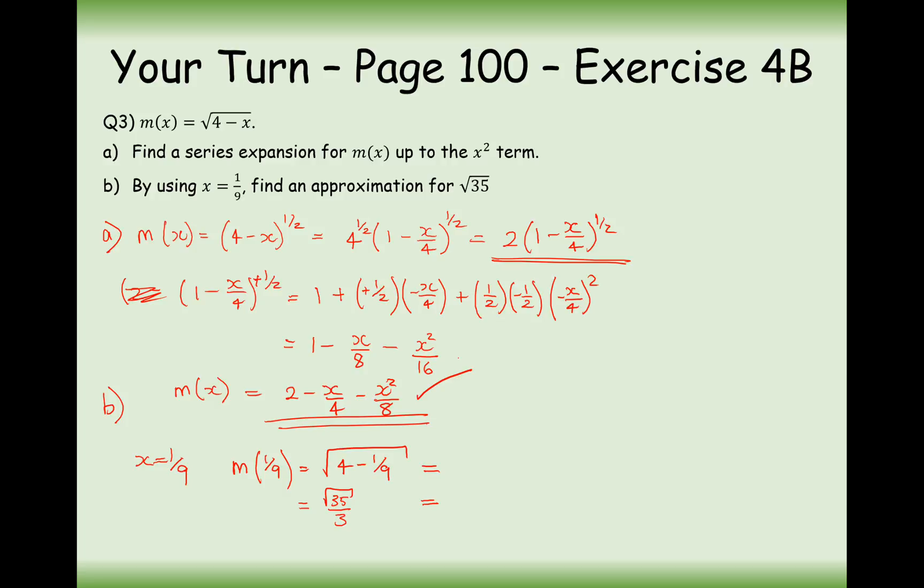We'll have to work out the binomial expansion with 1 ninth substituted in, and then we'll have to times it by 3. So type it into your calculator, 2 minus a ninth divided by 4 minus a ninth squared divided by 8, and in this case we're going to get a decimal answer of 1.970679012345.